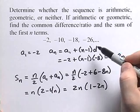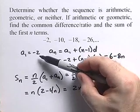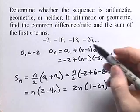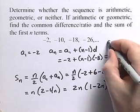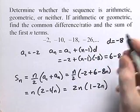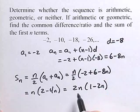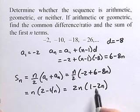So this is an arithmetic sequence. First term is negative 2. The common difference is negative 8. And the sum of the first n terms is 2n times 1 minus 2n.